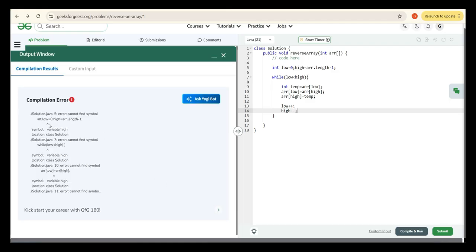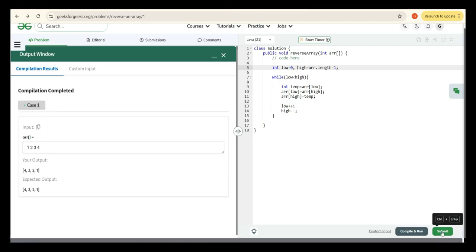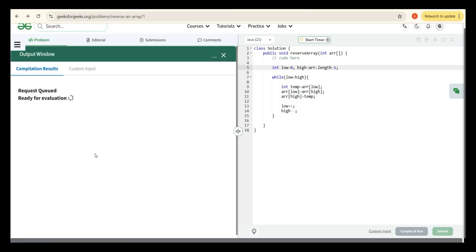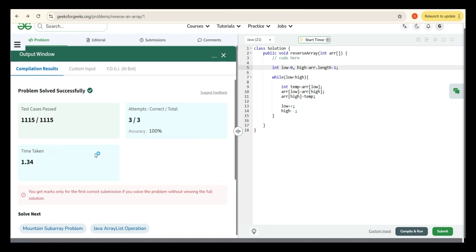It's getting the error low. Oh sorry, I made a mistake. Instead of semicolon, we need to give a comma. Yeah, it compiled successfully. Let's submit it for other test cases. Yes, all the test cases got passed.